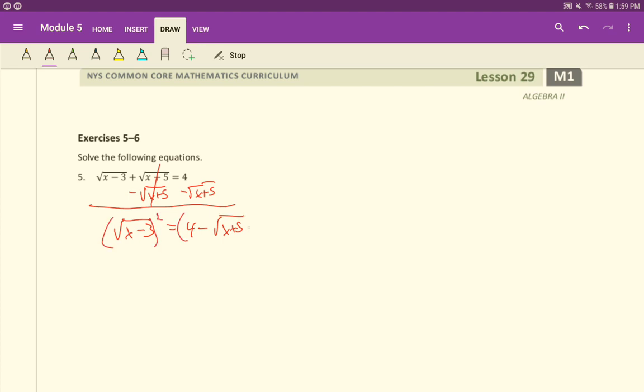We'll go ahead and square both sides. So we get x minus 3 equals, and we square this out, and we're going to multiply it by itself. I'll do that work up here.